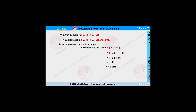In the fourth bit, the given points are (-5, -8) and (-5, -12). By observing, we can say that the x-coordinates are the same. The distance between the two points is given by |y2 - y1|. Substituting y2 = -12 and y1 = -8, we get |-12 - (-8)| = |-12 + 8| = |-4| = 4. Therefore, the distance between the given points is 4 units.